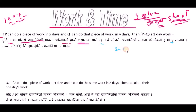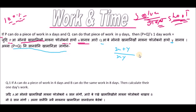The formula is: x plus y divided by x into y. So P plus Q together gives us this combined formula.